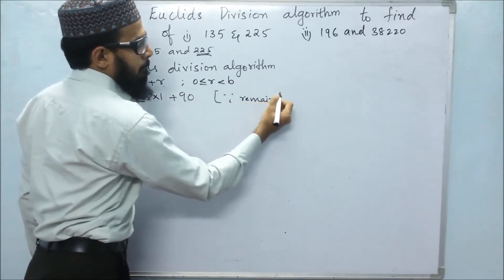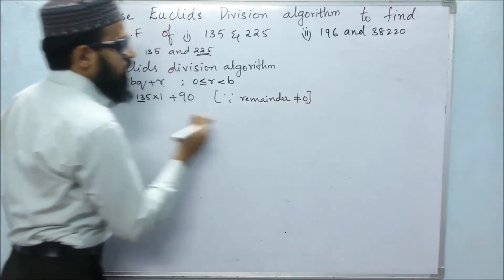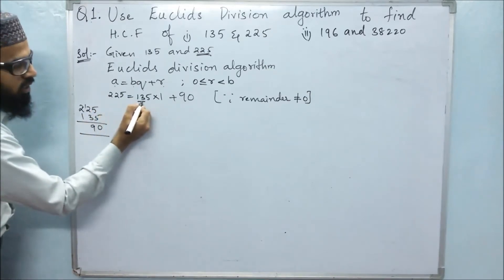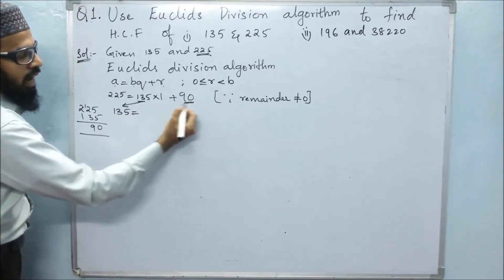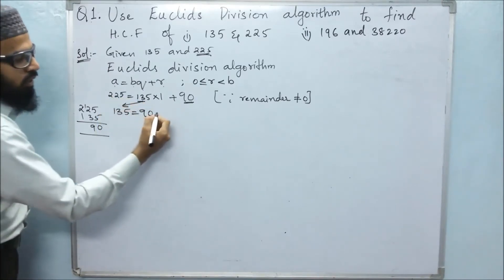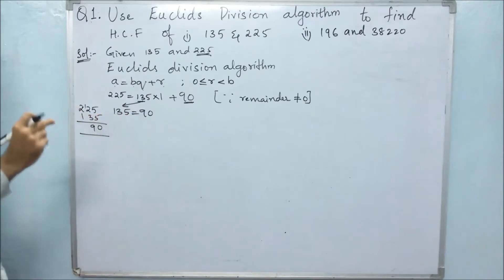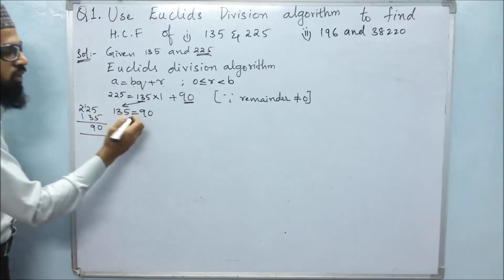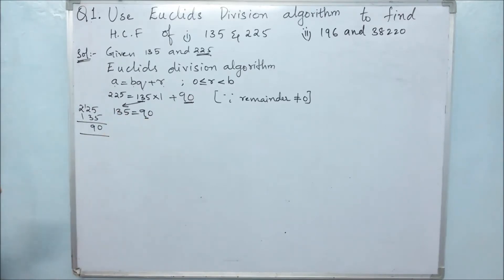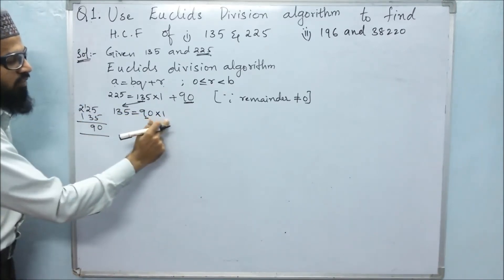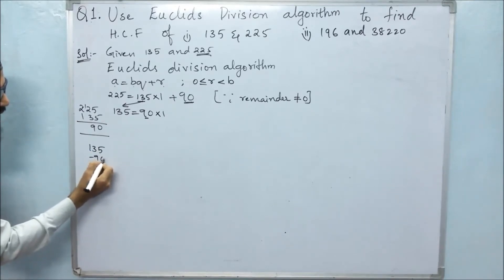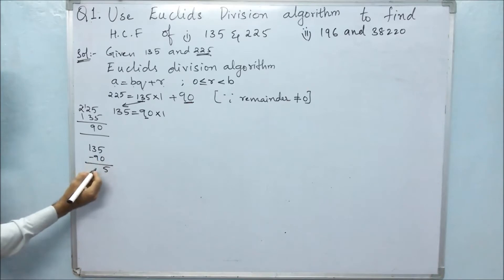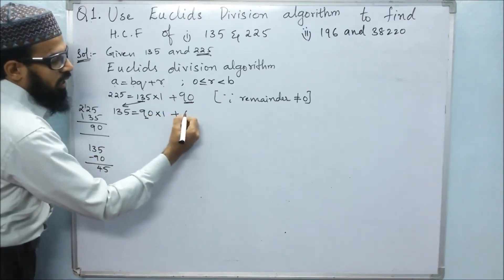Since the remainder is not equal to 0, this procedure continues. Now 135 comes in place of A, and 90 comes in place of B. We check 90's table to find the nearest number to 135. 90 ones is 90, so we subtract 135 minus 90. 5 minus 0 is 5, 13 minus 9 is 4, so the remainder is 45.